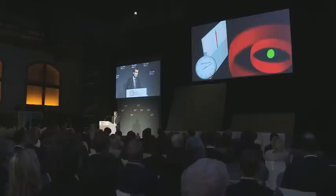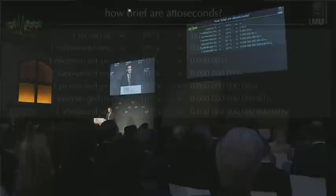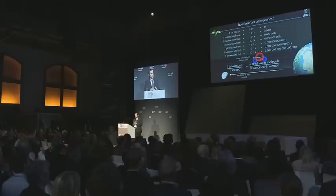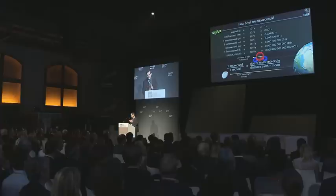So how brief are actually attoseconds? The most human unit of time is certainly the second, which is the approximate duration of our heartbeat. One nanosecond is a billion times shorter than one second and defines the characteristic scale for modern electronics. And one attosecond is by another billion times faster than one nanosecond. Now, how can we possibly capture motions that take place on such a short time scale?